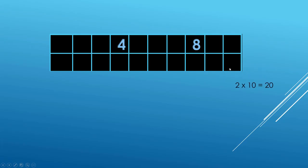Two times ten is twenty. Two times six is twelve. Two times eight is sixteen.